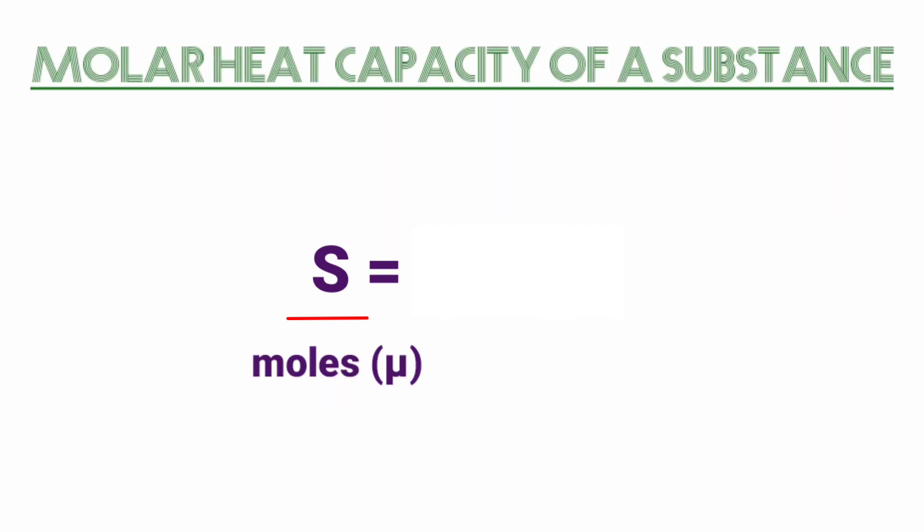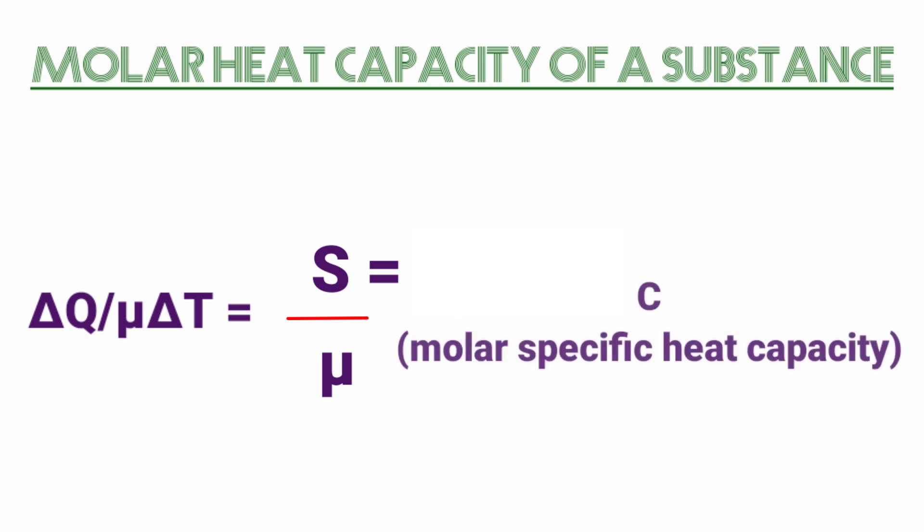If the amount of substance is specified in terms of moles μ rather than mass in kilograms, we can define heat capacity per mole of the substance by C = S/μ. Here, C is known as molar specific heat capacity of the substance. Like s, C is independent of the amount of substance. C depends on the nature of the substance, its temperature, and the conditions under which heat is supplied. The unit of C, that is molar heat capacity, is joule per mole per Kelvin.